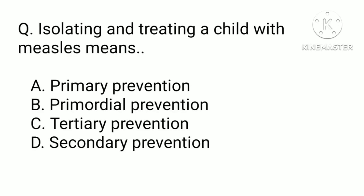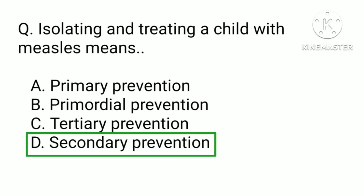Isolating and treating a child with measles means: a) primary prevention, b) primordial prevention, c) tertiary prevention, or d) secondary prevention. The correct answer is d) secondary prevention. In communicable diseases, isolation is primary prevention for others who are not infected, but isolating and treating a patient with an infectious disorder like measles is secondary prevention for the infected patient.